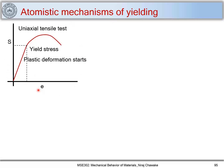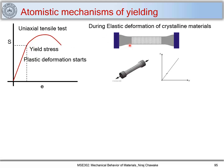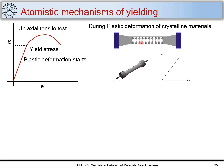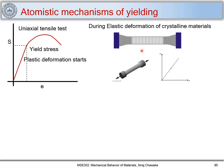We have seen this engineering stress-strain curve and we know that above yield stress, material starts plastically deforming. During elastic deformation of crystalline materials, the bonds get stretched when I increase the strain or stress on the material, and when I release the stress, the bonds spring back to their original position, and the material regains its original shape.